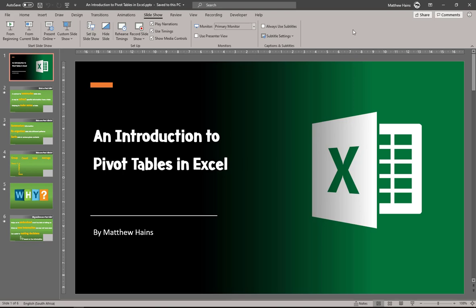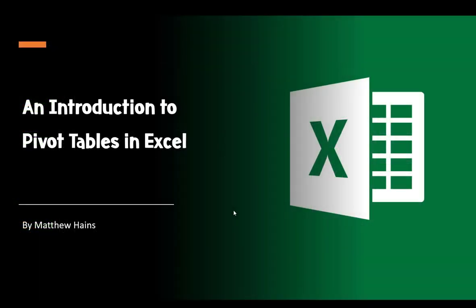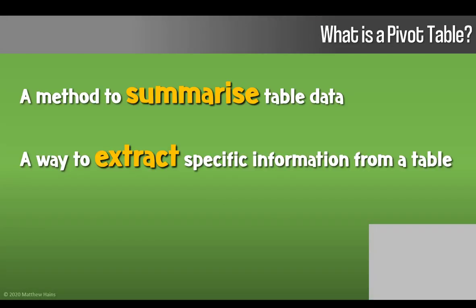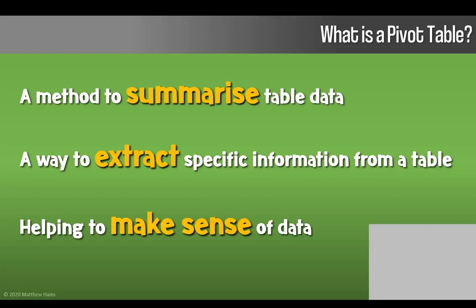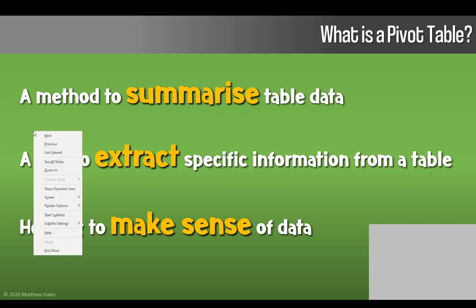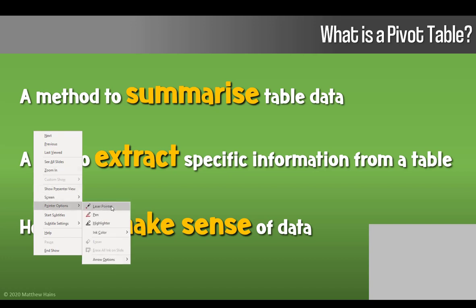One more quick tip: if you are in a presentation and you'd like to highlight or point out something on a slide, your mouse cursor will automatically appear when you move. But if you right-click on the slide and go to Pointer Options, you've got a laser pointer, a pen, and a highlighter. You can also change the ink color and select arrow options.